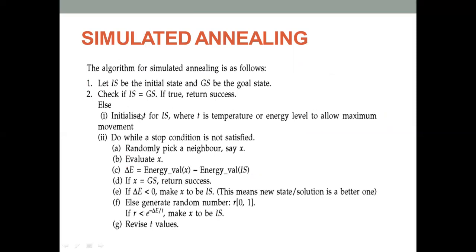First we have an initial state. If the initial state is a goal state, we stop the process. Otherwise, we start with the maximum temperature energy move. Then we randomly pick a neighbor as x-dash and calculate the delta value. If it is the goal state, we return. If it is better, we proceed. Otherwise, we check a random value and calculate it. Based on a comparative analysis with certain probability, we allow that node to become the next initial state and proceed.